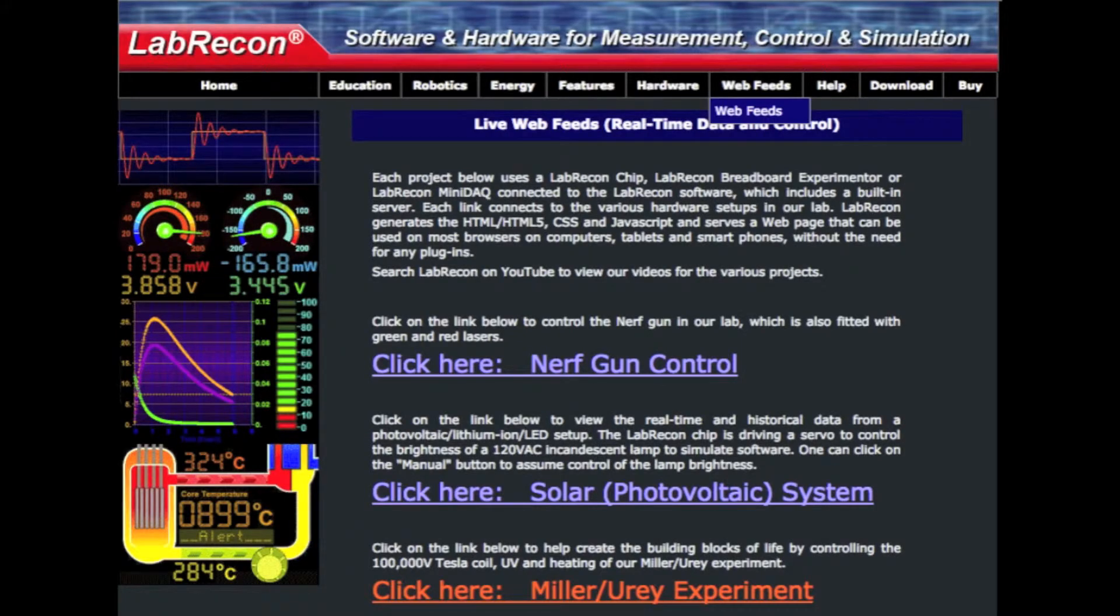In addition, we will host the software on our website, labrecon.com, under Live Web Feed. This will allow users to control the artificial lightning from the Tesla generator, along with a heating element and ultraviolet LEDs of 365 nanometers to simulate sunlight.